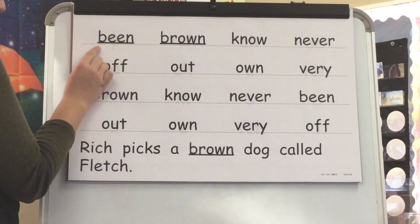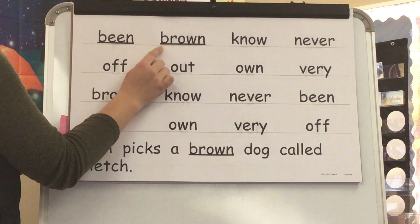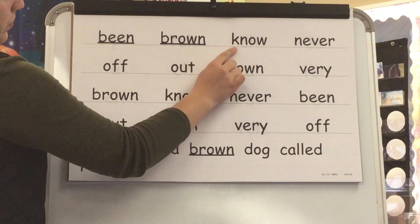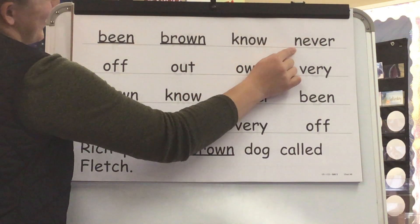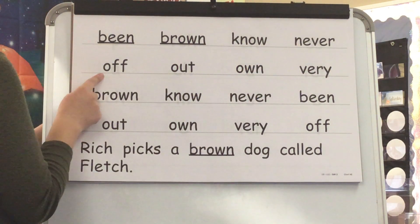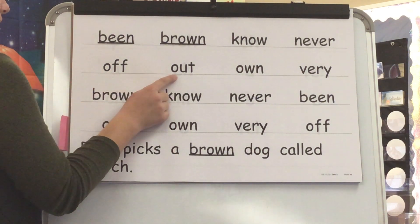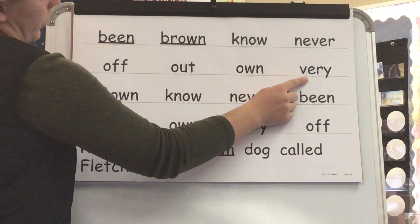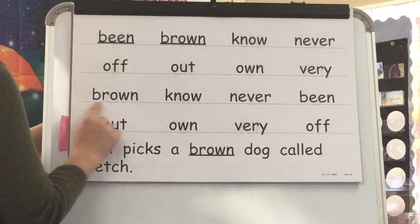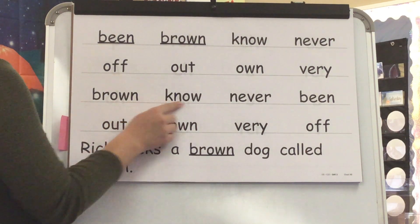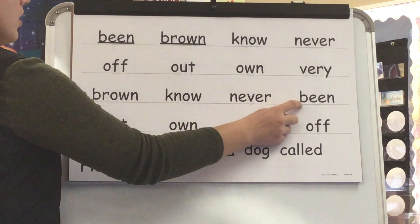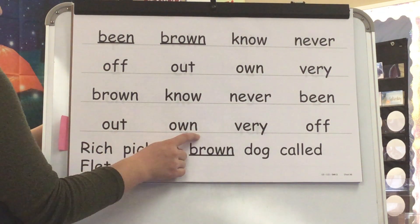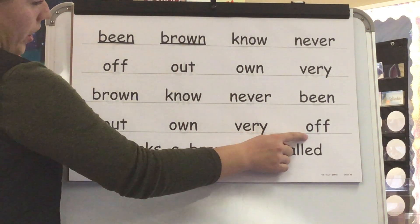This word is Ben. What word? Ben. Yes. This word is Brown. What word? Brown. Yes. This word is no. What word? No. Yes. Word? Never. Yes. Never. Yes. Off. Yes. Off. Word? Out. Yes. Out. Word? Own. Yes. Own. Word? Very. Yes. Very. Word? Brown. Word? No. Word? Never. Word? Ben. Word? Out. Word? Own. Word? Very. Word? Off.